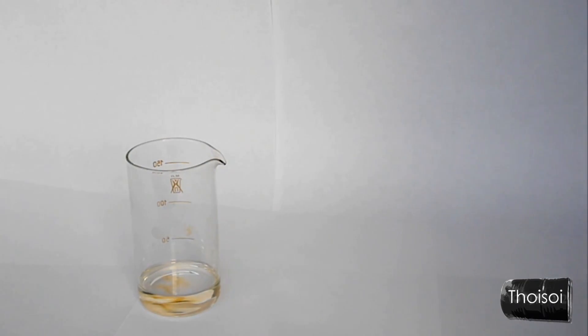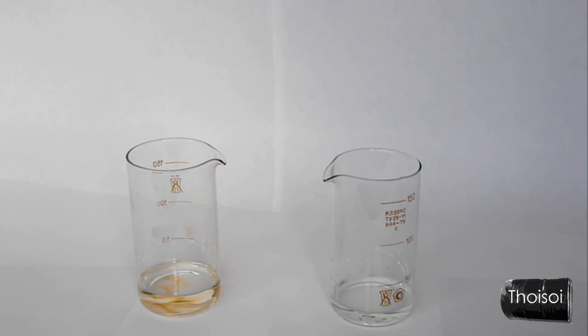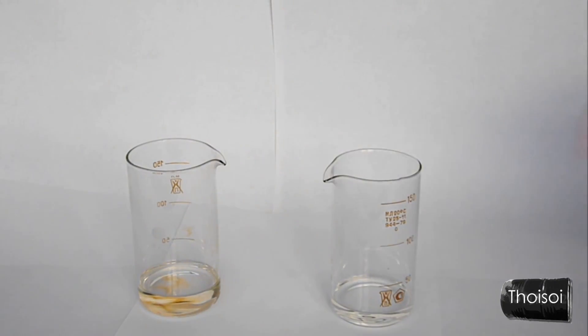So today, we will make some nitrocellulose. For this we will need two parts of concentrated sulfuric acid and one part of concentrated nitric acid.